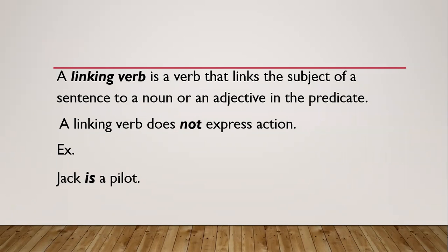For example: Jack is a pilot. 'Is' is a linking verb. It does not express an action; it links the subject to the part of the predicate. Another example: the pilot was very smart. 'Was' is a linking verb. It does not express action.